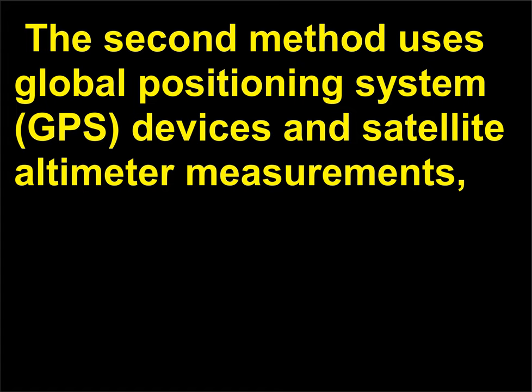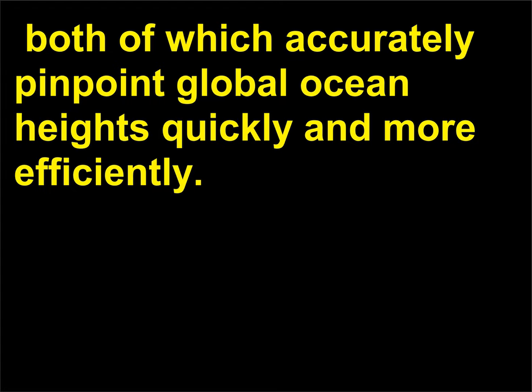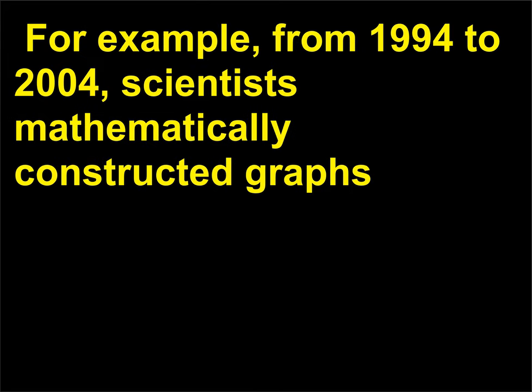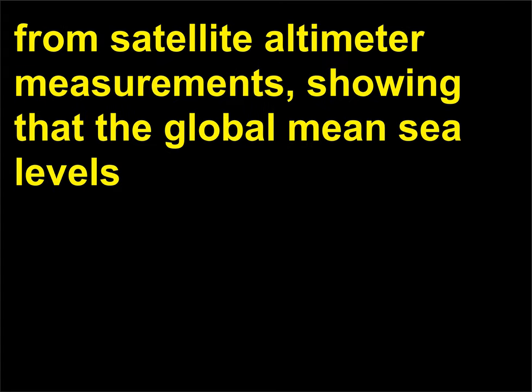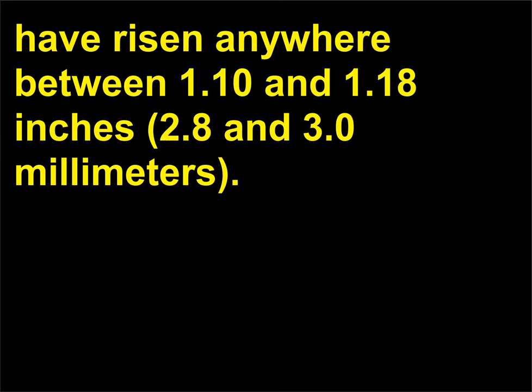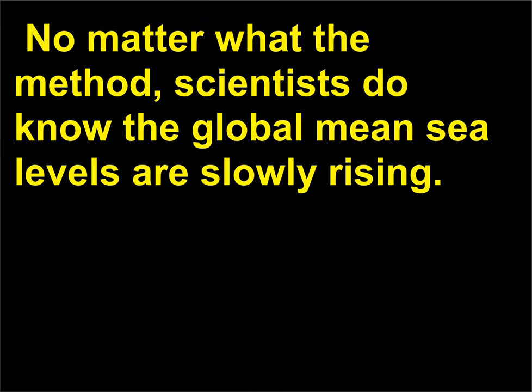The second method uses global positioning system (GPS) devices and satellite altimeter measurements, both of which accurately pinpoint global ocean heights quickly and more efficiently. For example, from 1994 to 2004, scientists mathematically constructed graphs from satellite altimeter measurements showing that the global mean sea levels have risen anywhere between 1.10 and 1.18 inches (2.8 and 3.0 millimeters). No matter what the method, scientists do know the global mean sea levels are slowly rising.